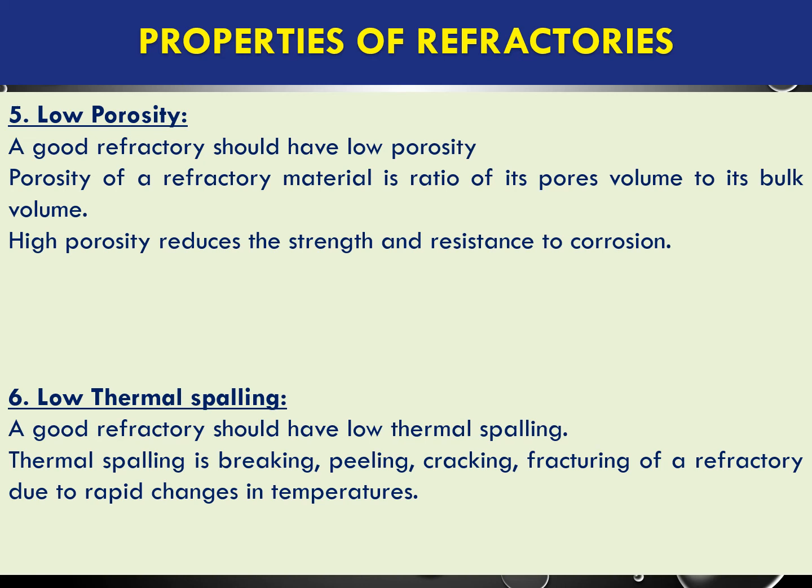The sixth property is low thermal spalling. Thermal spalling means breaking, peeling, cracking, or fracturing of the refractory due to rapid changes in temperature. A good refractory should have low thermal spalling. Interestingly, thermal spalling can be reduced by increasing porosity slightly, even though low porosity is generally preferred.